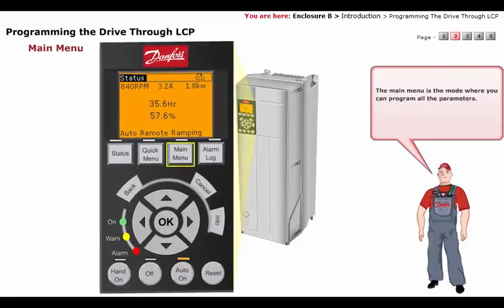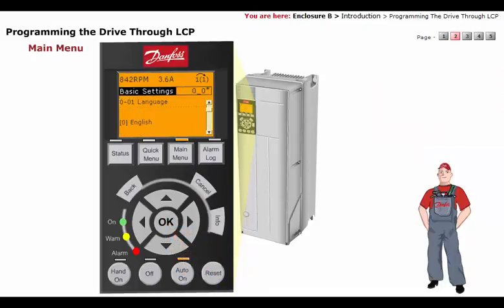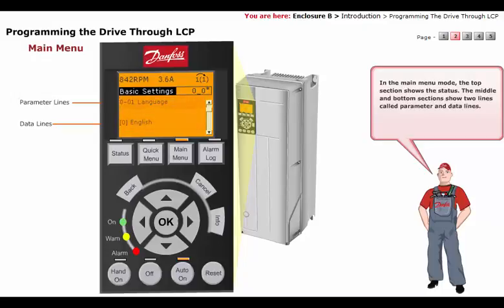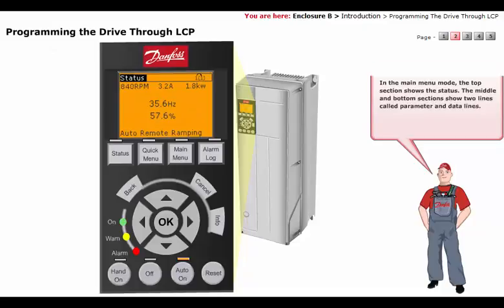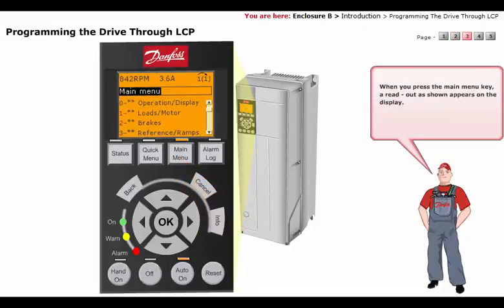The Main Menu is the mode where you can program all the parameters. In the Main Menu mode, the top section shows the status. The middle and bottom sections show two lines called parameter and data lines. When you press the Main Menu key, a readout as shown appears on the display.